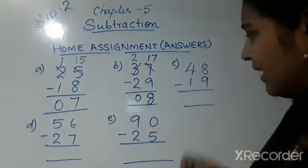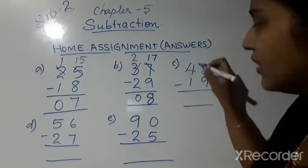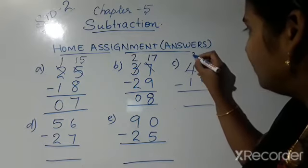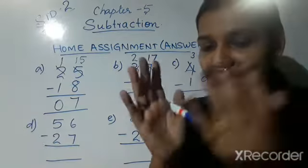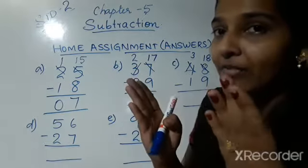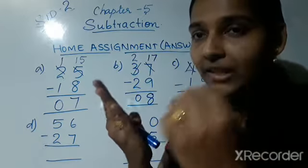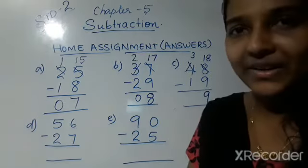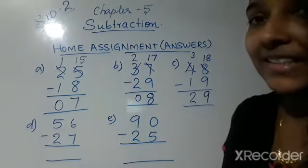Now the next one: 48 minus 19. The ones place digits are 8 and 9 — we cannot subtract 9 from 8, so regroup. Borrow 1 from 4, so 8 becomes 18 and 4 becomes 3. Now subtract 9 from 18 by backward counting: 17, 16, 15, 14, 13, 12, 11, 10, 9. The answer is 9. Then 3 minus 1 is 2. So the answer is 29.